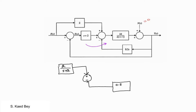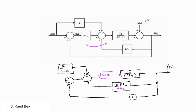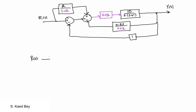Using the ninth block diagram reduction rule, we will combine the two summing points as shown. Alternatively, you can rearrange as follows: you would have the 0.5S over S+2 block in parallel with a block of 1. These can be added together, and on the left-hand side you also have two blocks in parallel, which are the 2 over S+2 block and the block of 1.